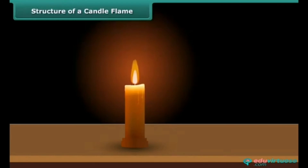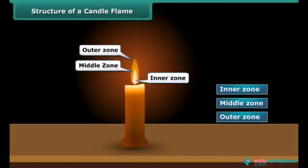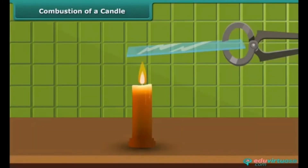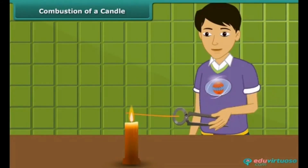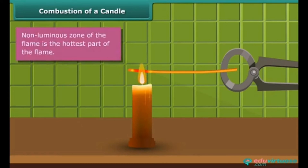A candle flame can be divided into three regions: inner zone, middle zone, and outer zone. Rohan introduces a glass plate into the luminous zone of the candle flame using tongs — the glass forms circular blackish spots, indicating the presence of unburnt carbon particles in the luminous zone. In another activity, Rohan holds a thin copper wire inside the flame; the portion of the wire just outside the flame gets red hot, indicating that the non-luminous zone is the hottest part of the flame.